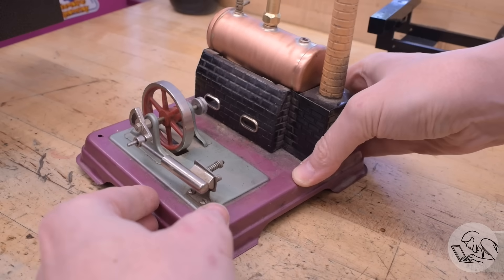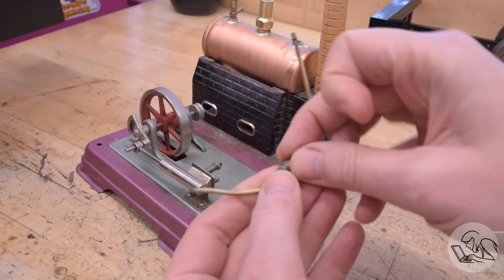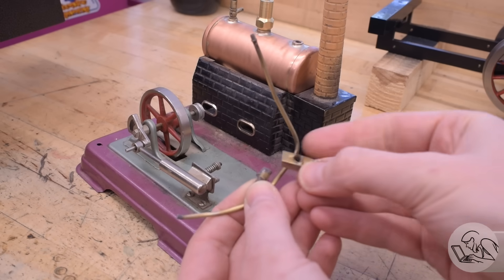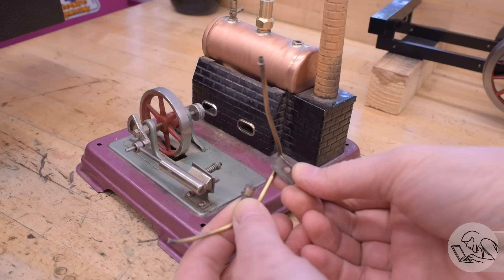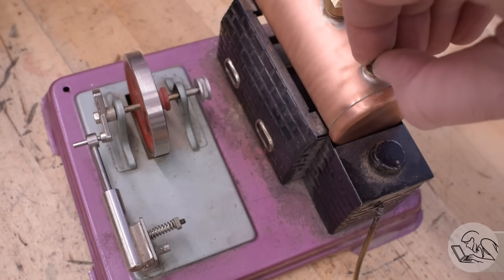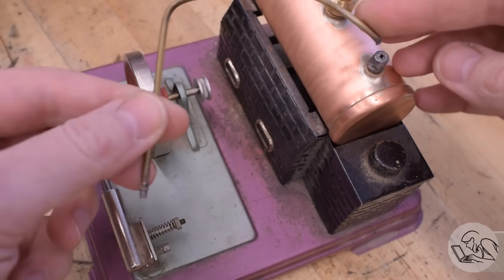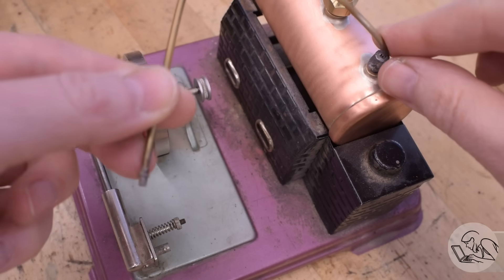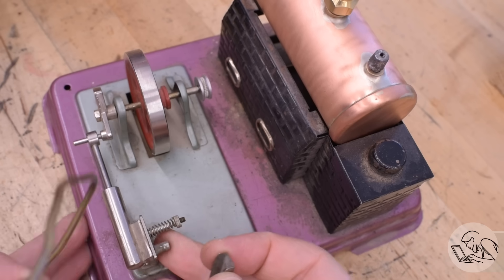When last we left our little steam toy it was looking pretty good with its shiny new boiler, but the steam feed pipe is still in a very sorry state. This debris here is the system that gets steam into the cylinder. We need to rebuild all of this. The original had this mounting boss that threaded into the boiler and then the feed pipe was soldered into this and routed down to the cylinder.